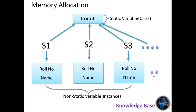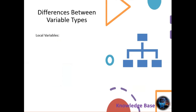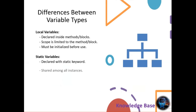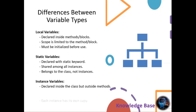To summarize the differences between these variable types: local variables are declared inside methods or blocks and have their scope limited to that block. Static variables are declared with the static keyword and are shared among all class instances. Instance variables are declared inside the class but outside methods, and each instance of the class has its own copy.